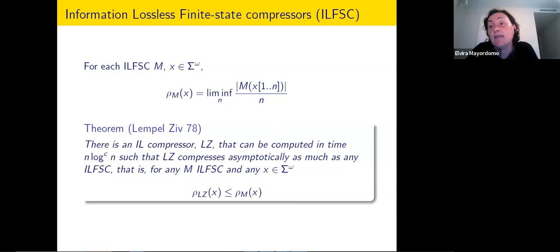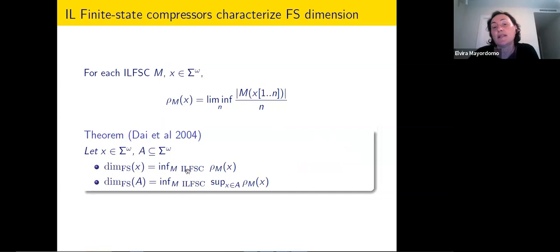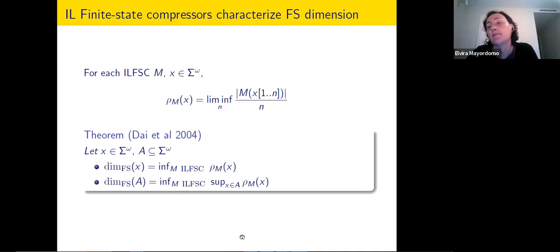In many ways, the Lempel-Ziv algorithm is a universal version of these information lossless finite state compressors in practice, even if there are sequences that Lempel-Ziv compresses a bit more than the best finite state compression. The finite state dimension of a single sequence is just the compression ratio for the best compressor. For a set, you take the infimum as the last quantifier.